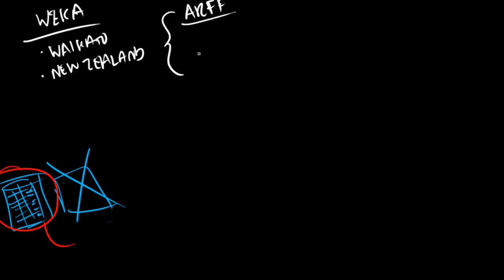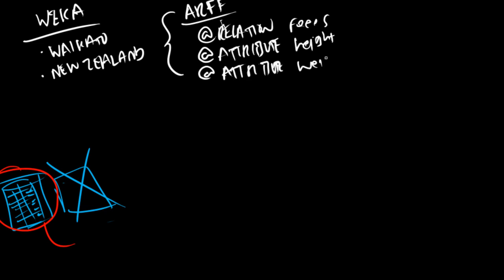The ARFF format is divided into two parts, the header and the body. In the header, we state, first of all, the relation, in this case let's say we're going for fees. We've got two main attributes, attribute height and attribute weight. It's important to mention what type of data each attribute is. We're going to go for numeric for both of them.